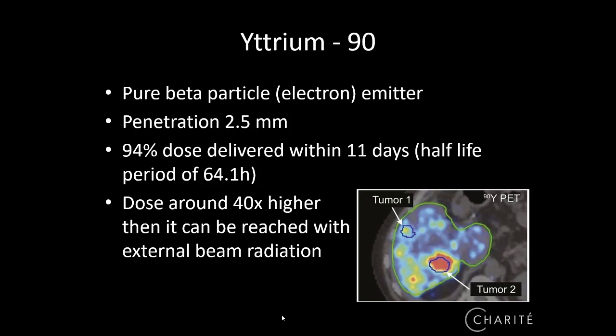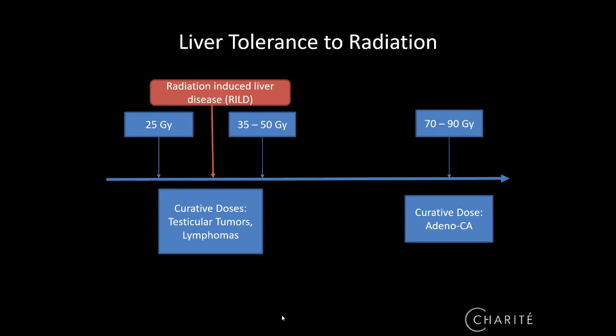Yttrium-90 is a pure beta-emitting element, and its penetration is not very high — only two and a half millimeters. What also makes it a kind of brachytherapy is that 94% of the dose is delivered within 11 days, as the half-life period is only 64 hours. The dose around the probe is 40 times higher than can be reached with external beam radiation adjacent to the tumor.